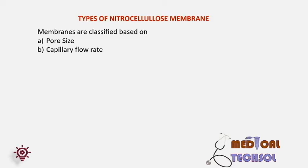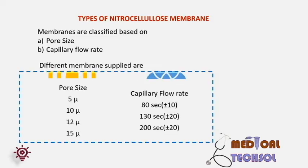Pore size is measured as the largest pores in the filtration direction. Capillary flow rate is the speed at which the sample moves onto the membrane when it is applied. It is generally measured in seconds per 4 centimeters. Different membranes supplied are based on pore size: 5 microns, 10 microns, 12 microns, and 15 microns; and based on capillary flow rates: 80 seconds, 130 seconds, 20 seconds, etc.